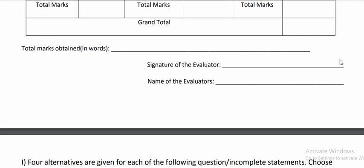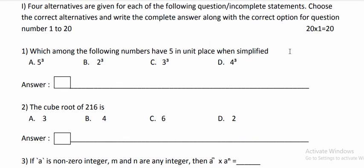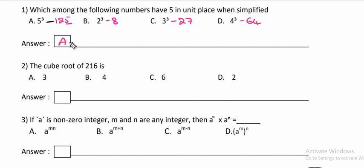Dear students, there are 20 objective type MCQ questions. The first question: which among the following numbers has 5 in the unit place? The number having 5 in the unit place — observe here, 5 cube gives you 125. 2 cube is 8, 3 cube is 27, and 4 cube is 64. Therefore, in the unit place, 5 is in option A — 5 cube has 5 in the unit place.